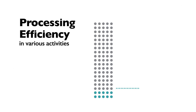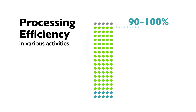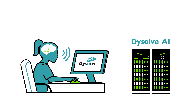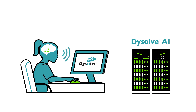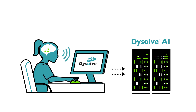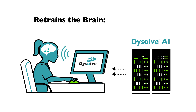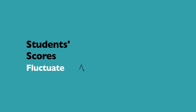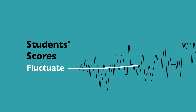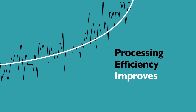Students often begin below 20% efficiency in many activities. The goal is 90 to 100% efficiency. Dissolve is the only program that can resolve processing difficulties because it uses breakthrough AI technology to locate them. Dissolve AI is successful because it continuously evaluates each person's brain processes as it retrains the brain to perform better and faster. Although students' scores will fluctuate as Dissolve AI presents more and more challenging activities, we generally see a sharp upward trend as processing efficiency improves overall.